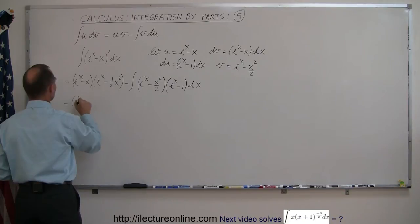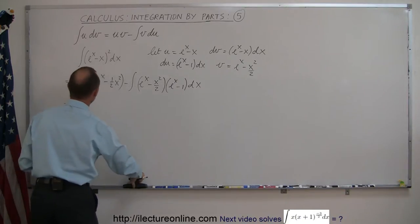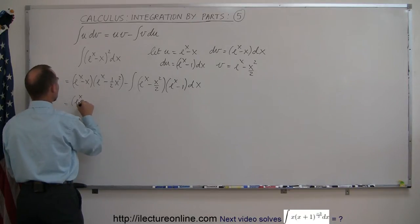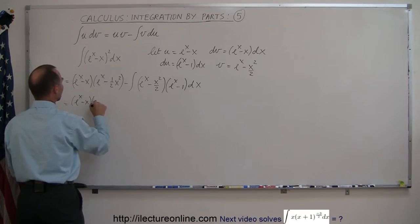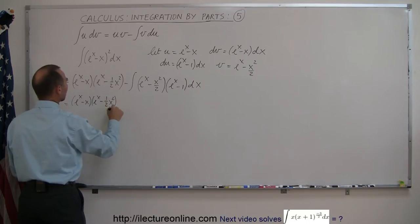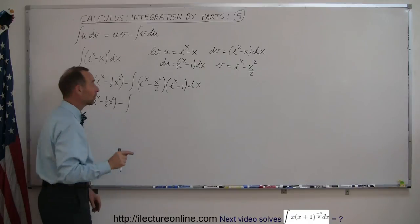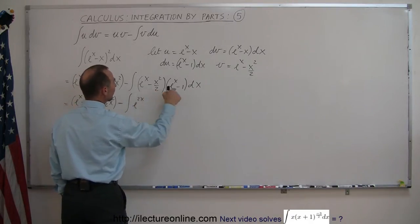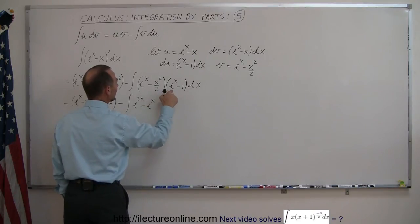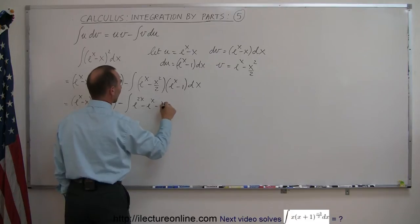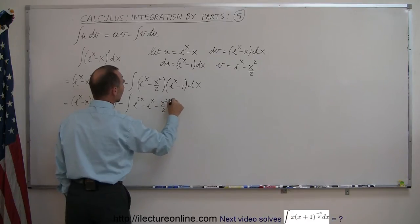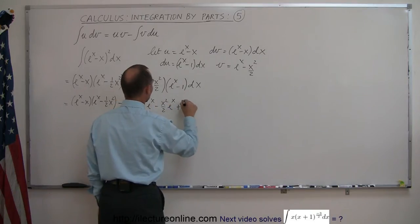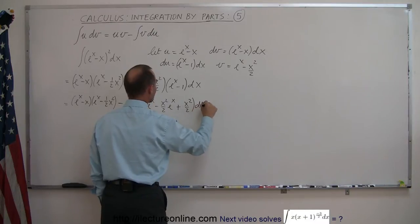So this equals e to the x minus x times e to the x minus one half x squared, minus the integral of the expanded product. When we multiply, we get: e to the x times e to the x is e to the 2x; e to the x times negative 1 is minus e to the x; e to the x times negative x squared over 2 is minus x squared over 2 times e to the x; and finally, negative x times negative one half x squared gives plus x squared over 2 times dx.